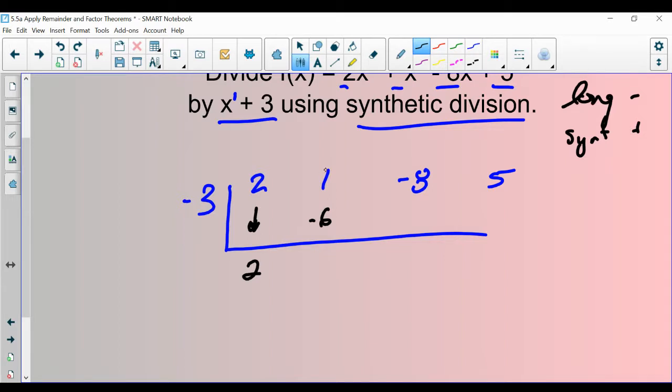So here, you need to add these things and write your answer here. Remember, your answer is going to be what's down here. One and negative six, when you add those together, make negative five.